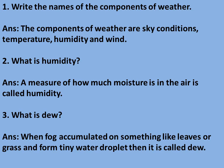Question 3: What is dew? Answer: When fog accumulated on something like leaves or grass and formed tiny water droplets, then it is called dew.